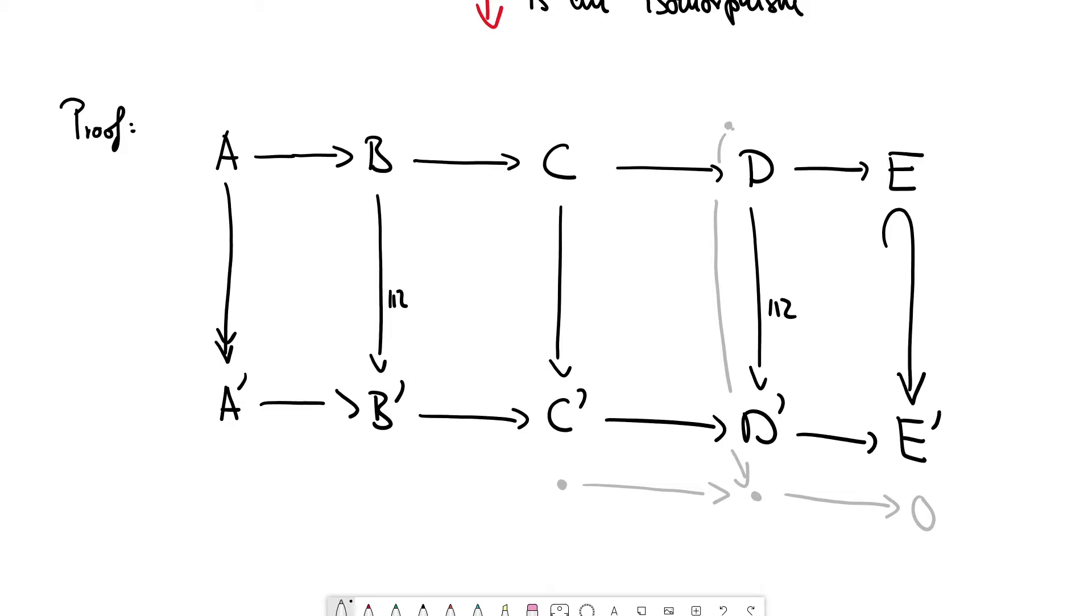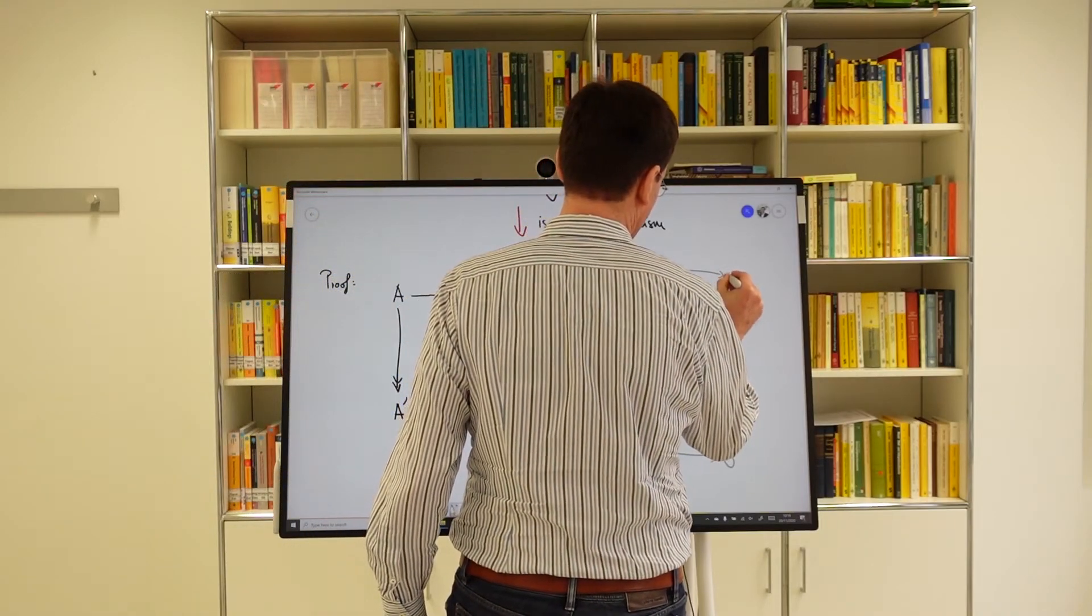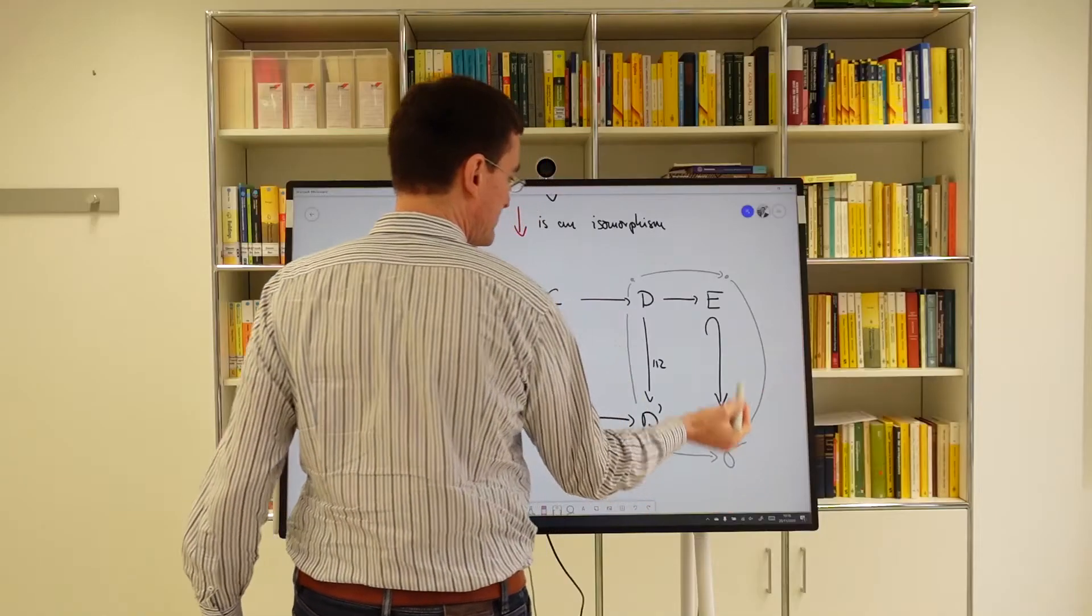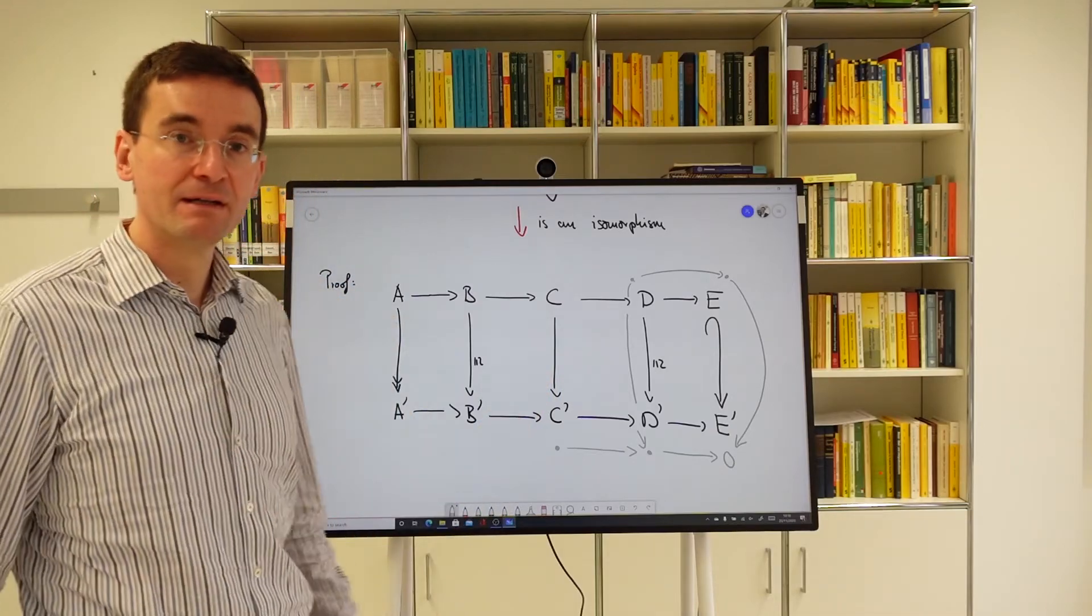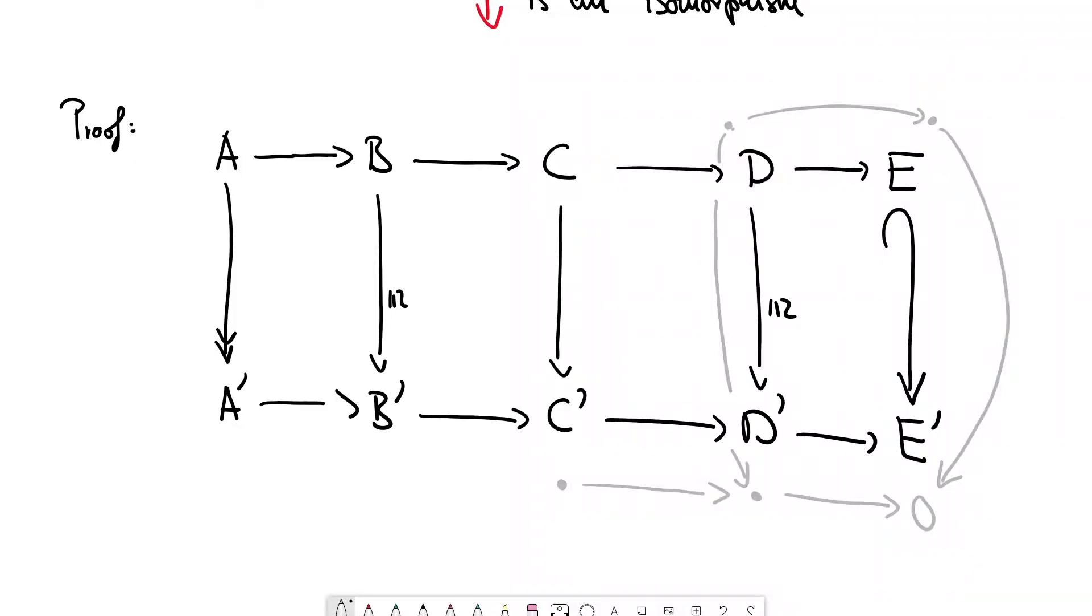So, what can we do to this element in D? Well, at that point, we can only move it to E and maybe move that further down. And since the whole diagram, in particular, the right-hand square of this diagram commutes, this element in E will be mapped to zero in E prime. But remember, the arrow from E to E prime was injective. So, that element up here was already zero. Let's put a zero here. And that's the situation so far.